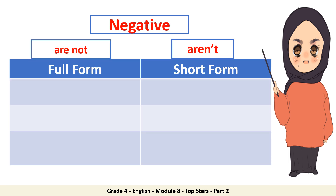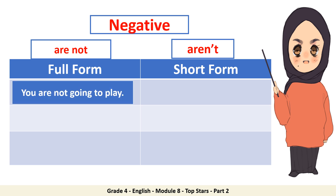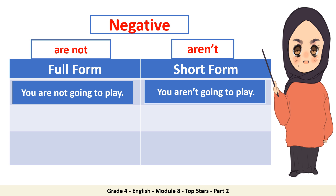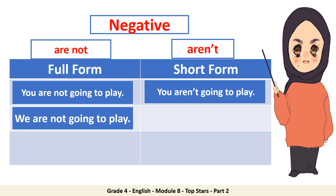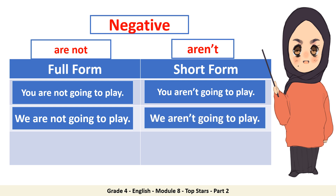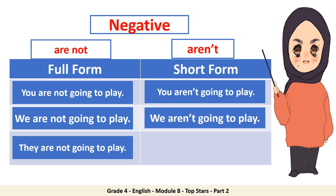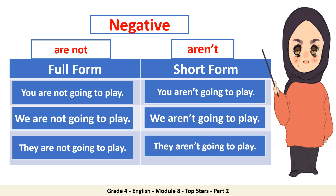Let's continue with examples of the full form 'are not' and the short form 'aren't'. You are not going to play. We are not going to play. They are not going to play / they aren't going to play. In the full form we use 'are not', and for the short form we use 'aren't' — are plus N apostrophe T.